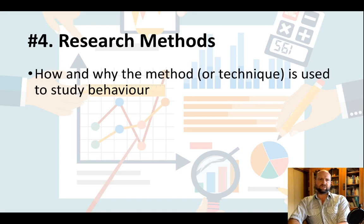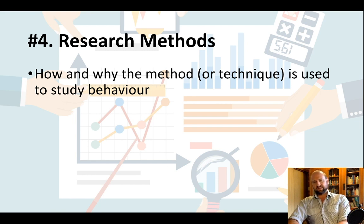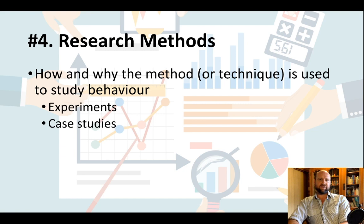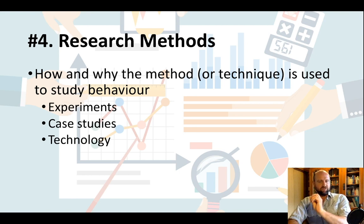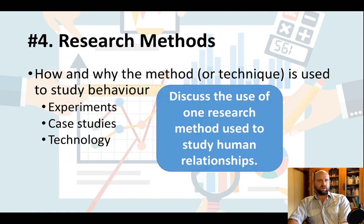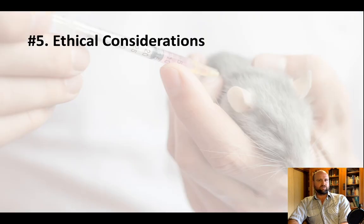The fourth type, and one of the harder ones, is research methods. You have to explain how and why the method is used. I am also putting under here techniques in the biological approach — you have to understand one or more technological techniques used to study the brain and behavior. Experiments and case studies are the methods I would focus on, and fMRI and MRI are techniques according to the IB, not research methods. So talk about case studies, experiments, or correlational studies when asked about research methods. For example, in Paper 2 you might be asked to discuss the use of one research method used to study human relationships.